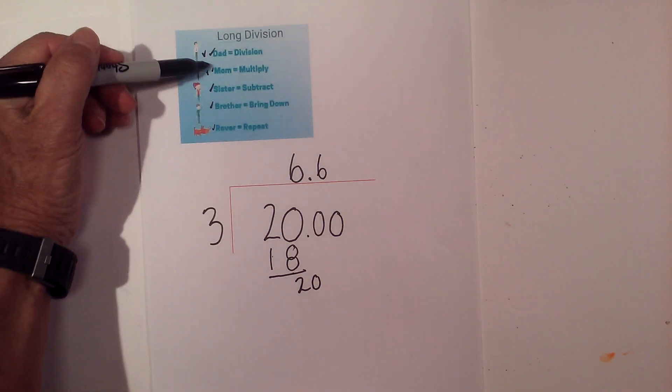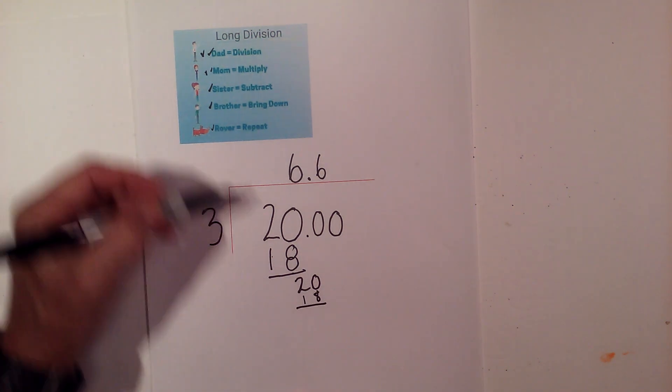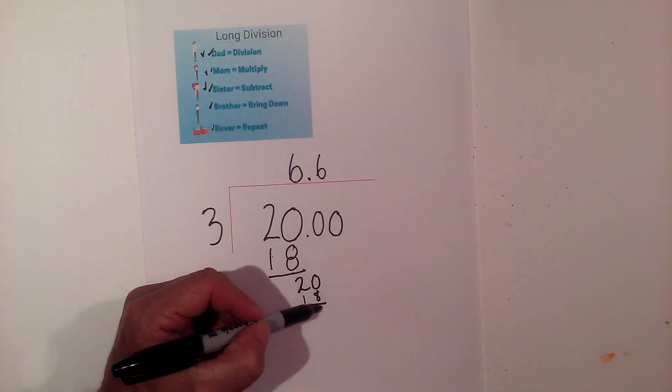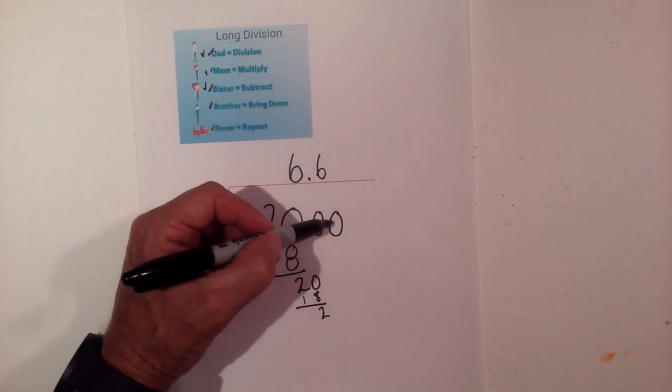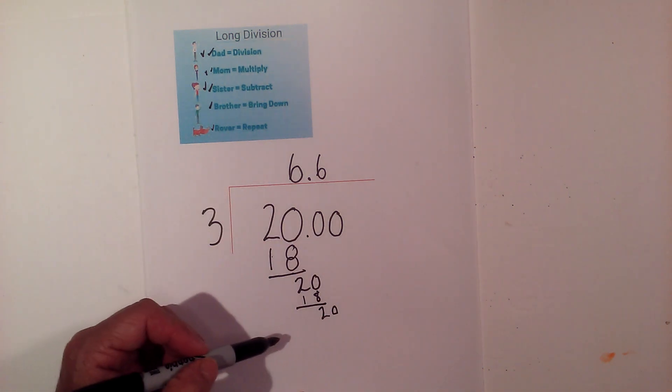I multiply. 6 times 3 is 18. I now subtract. 20 minus 18 is 2. Okay, and it does not go evenly. So I'm going to bring down again, and then I'm going to repeat.